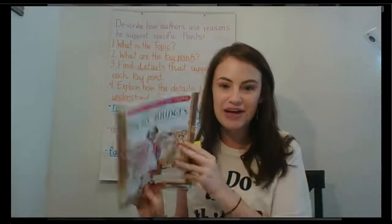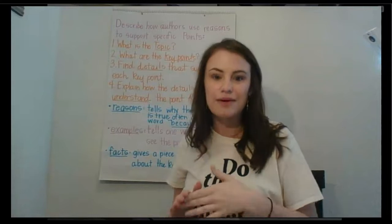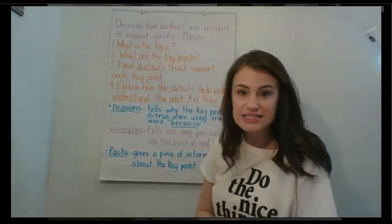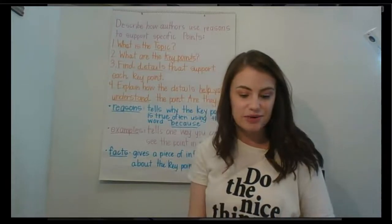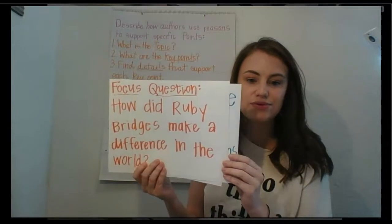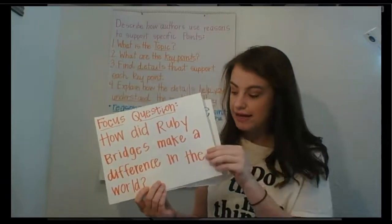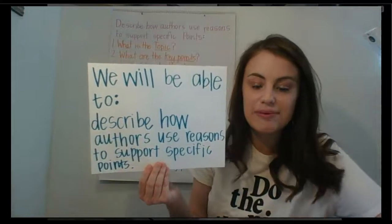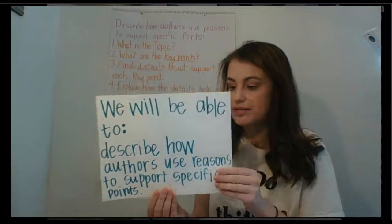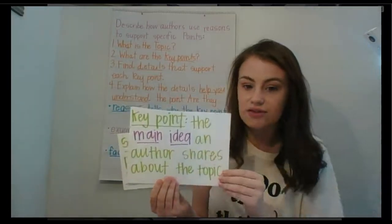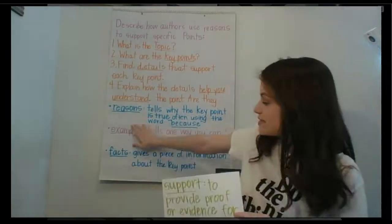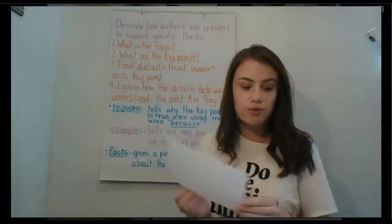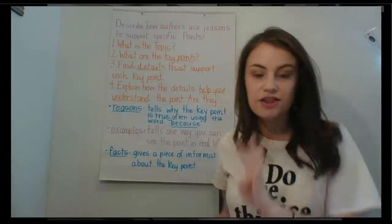Let's go ahead and jump into our second part of the lesson, where I will model how to describe how authors use reasons to support specific points, so that when you do this yourself on Wednesday, you will know exactly what to do. Our focus question is: how did Ruby Bridges make a difference in the world? The objective we are learning today is to describe how authors use reasons to support specific points.